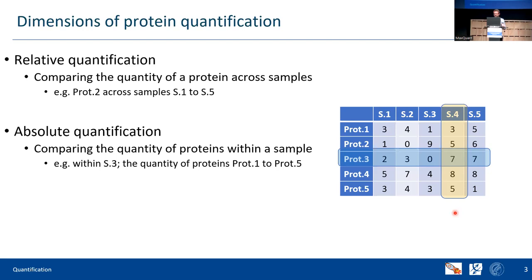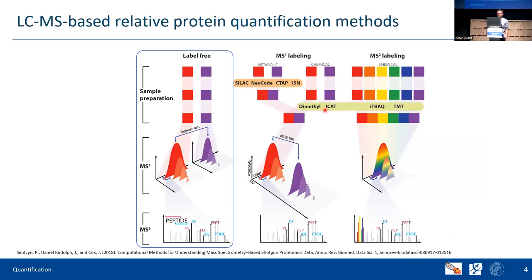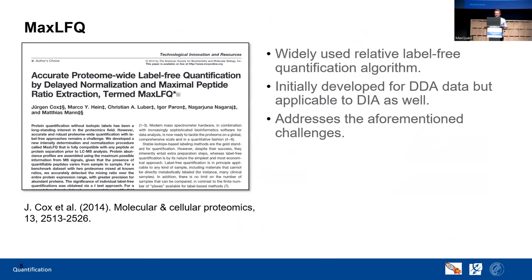There are several ways to do relative quantification: MS1 labeling with methods like SILAC, MS2 labeling using TMT or others, and also label-free. I'm talking about label-free — LFQ is in the title — and I'm mainly discussing the MaxLFQ paper from 2014. MaxLFQ is included in MaxQuant and is widely used. Since last year it's not only working for DDA data but also for DIA data. I'm talking about DDA today, and tomorrow Jürgen will explain how it works in DIA.